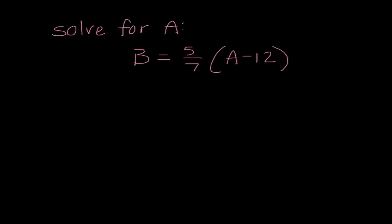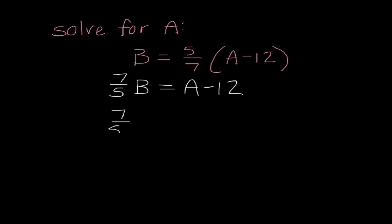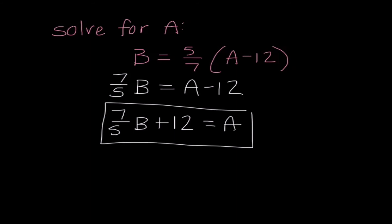Isolating variables is the next topic — this is from Quiz 3, and we tend to make it harder than it needs to be. It's ingrained in us to distribute right away, and that's not wrong, but if I want to get A all by itself, why add a coefficient first? Start by getting rid of 5/7 by multiplying both sides by 7/5. That leaves 7/5 B equals A minus 12. Then add 12 to both sides to get A all by itself. That's the easiest way.